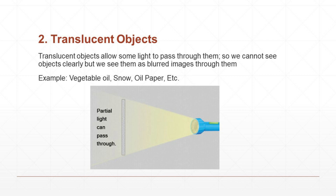Examples of translucent objects: paper soaked in oil, snow, vegetable oil, etc. Looking at the picture, oil paper is placed in the path of a torch light. You can't see through it very clearly — only partial light passes through. Partial means one portion of the light passes through, so we call these translucent objects. Light passes partially, meaning some light passes through them.